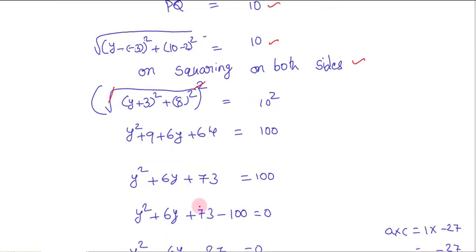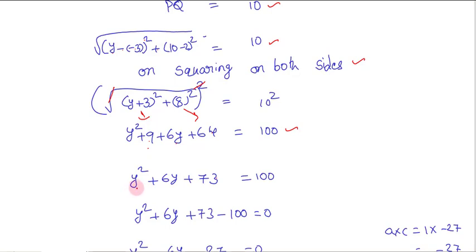So we can write this as y² + 9 + 6y — expanding (y + 3)² using the (a + b)² formula — plus 8², which is 64, equal to 100. Combining constants: y² + 6y + 73 = 100.